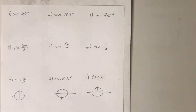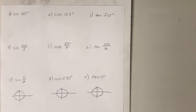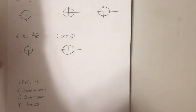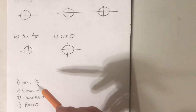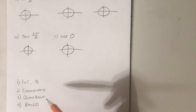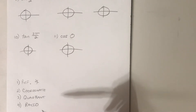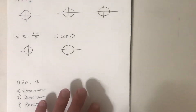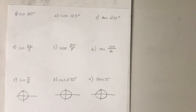We've spent a lot of time constructing the unit circle and now we're going to look at how we can utilize it. The questions posed here are to find sine, cosine, and tangent of the angles constructed around the unit circle. There will be a four-step process: identify the reference angle, the coordinate pair associated with it, which quadrant the angle is in, and which ratio we are dealing with.